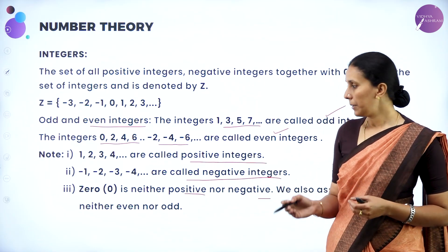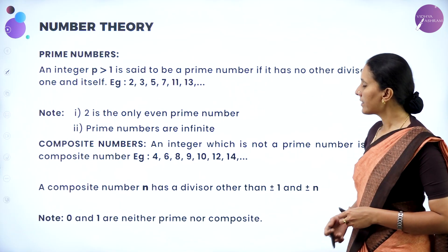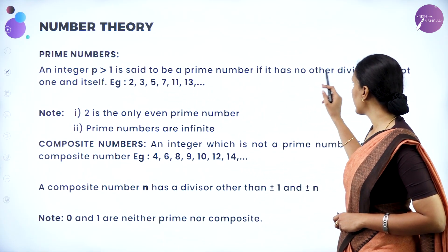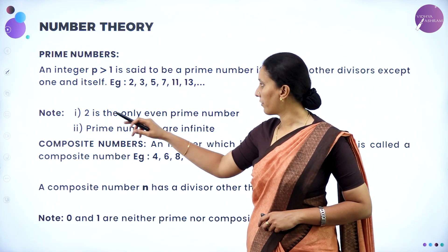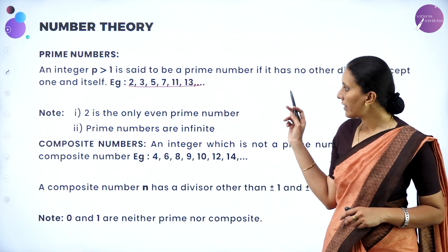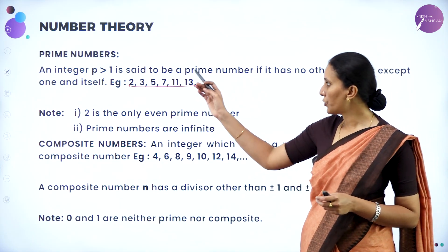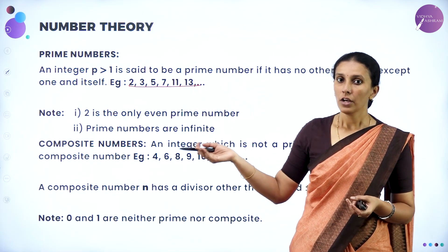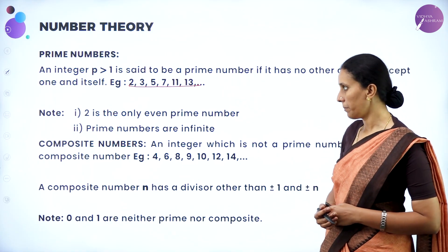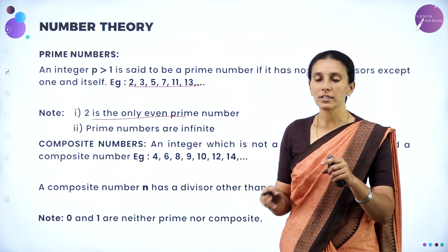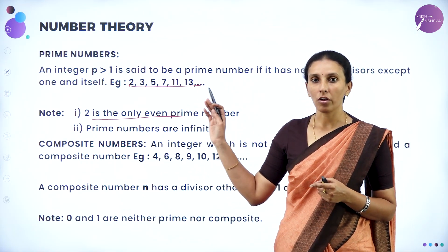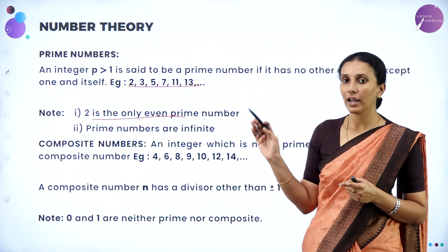The next thing is prime numbers. An integer p, which is greater than 1, is said to be a prime number if it has no other divisors except 1 and itself. Examples: 2, 3, 5, 7, 11, 13 — other than 1 and themselves, there is no number which divides them. Such numbers are called prime numbers; numbers which are not prime are called composite numbers. Note: 2 is the only even prime number because 2 divides all other even numbers. Prime numbers are always infinite — there are infinitely many primes.